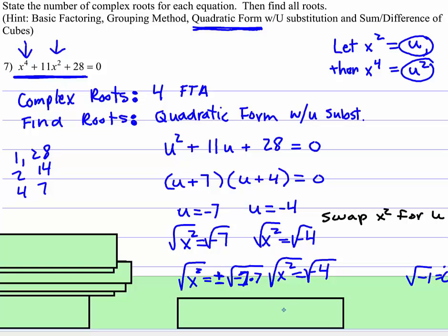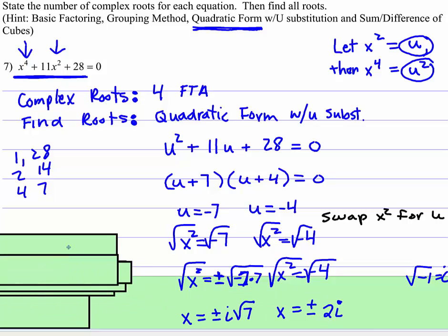Alright, so when you simplify that, when you take the square root of x squared as x, the square root of negative 1 is positive and negative i. And what you're left with is positive and negative i root 7.